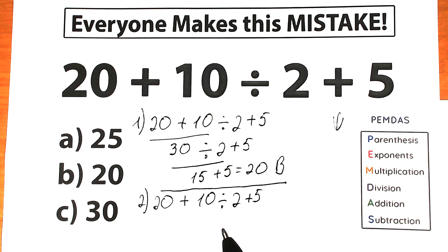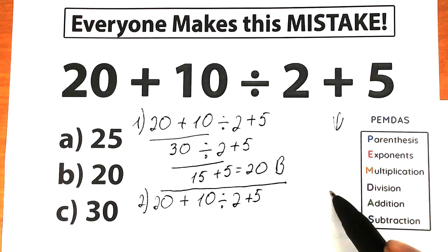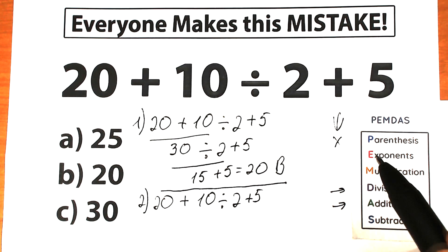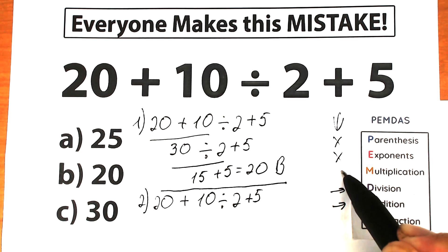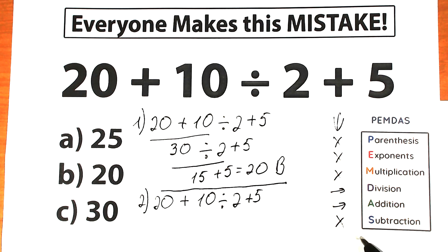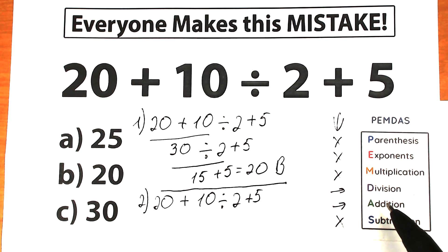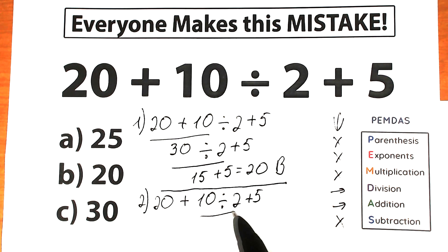Let's solve our challenge according to PEMDAS order of operations. We have 20 plus 10 divided by 2 plus 5. Scanning the challenge: we have division and we have addition. We don't have any parentheses, exponents, multiplication, or subtraction — only division and addition. So what should we do first — add or divide? Higher position means higher priority, so division has higher priority. The first step is division.